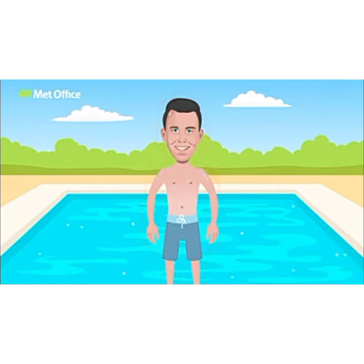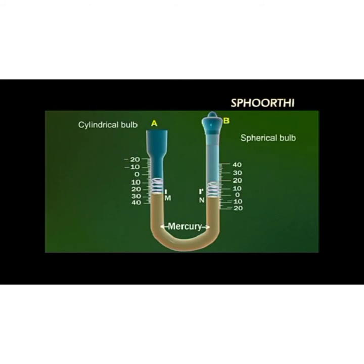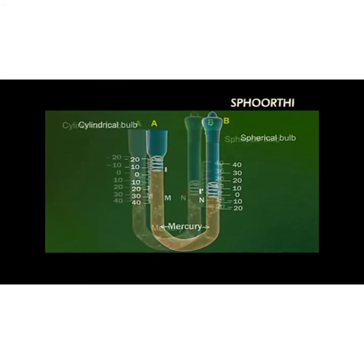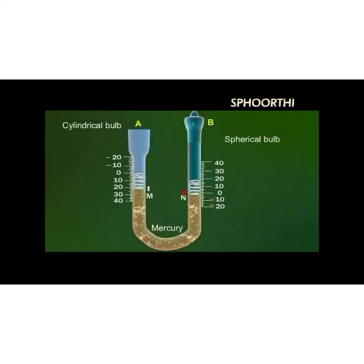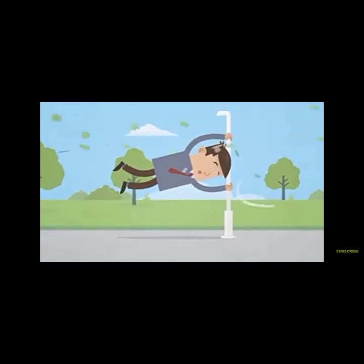The next element of weather we are looking at is temperature. What is temperature? Temperature is the degree of hotness or coldness of a place. It is measured using a Six's thermometer, where one side registers the maximum and the other registers the minimum temperature. The bend at the bottom of the thermometer contains mercury, which moves up and down based on the expansion and contraction of alcohol.